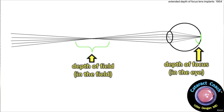Let's talk about a couple of simple topics first. What is depth of field, and what is depth of focus? We can see in this picture here — depth of field is actually out in the field, whereas depth of focus is in the eye.